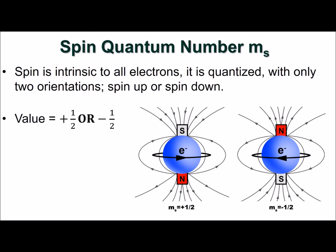Spin is an intrinsic property of all electrons. It is quantized, and there are two possible alignments of spin: spin up and spin down, designated as plus one-half and minus one-half.